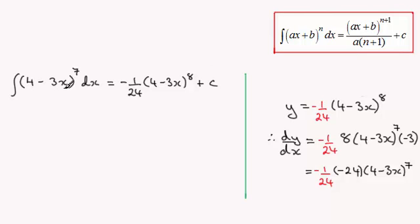So when you look at this example here, a is -3 and n is 7. So you're going to get the linear factor (4 - 3x) to the power 7+1 which is 8, and then it's divided by a which was -3 times the new power 8. -3 times 8 gives us -24 that you're dividing it by.